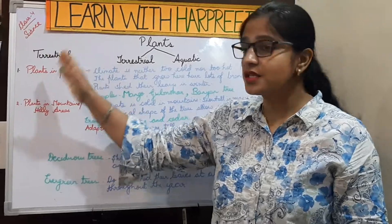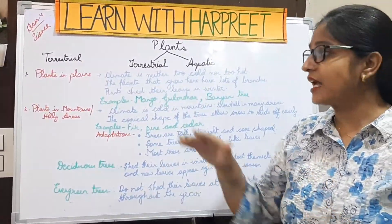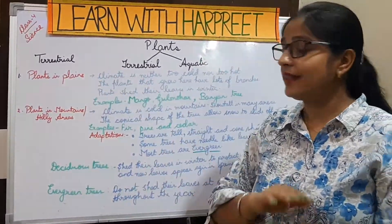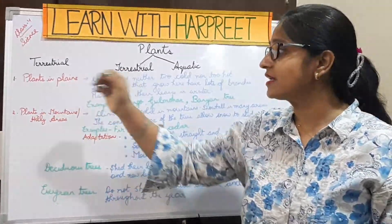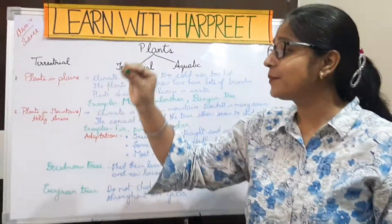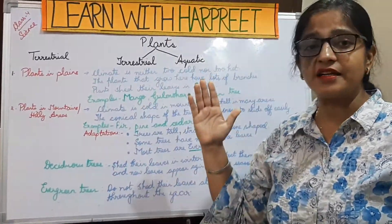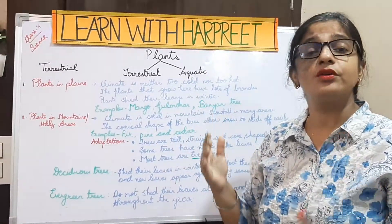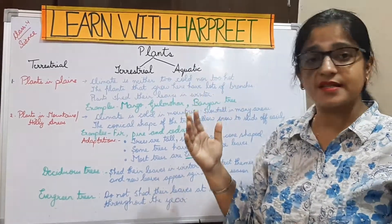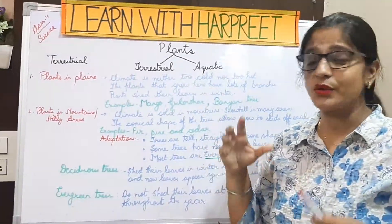Terrestrial means on land. The land can be a plain land, a mountain or hilly area, marshy areas, or forest. Today I will take two points only: plants that grow in plains, and plants that grow in mountains or hilly areas. In upcoming videos we will also learn about plants that grow in deserts and marshy areas.